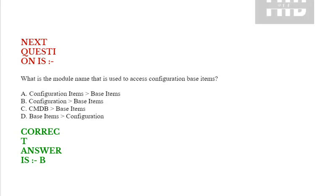What is the module name that is used to access configuration base items? Option A: Configuration items base items. Option B: Configuration base items. Option C: CMDB base items. Option D: Base items configuration. Correct answer is Option B.